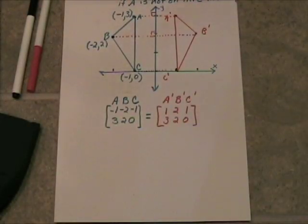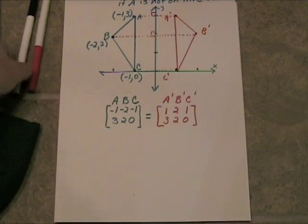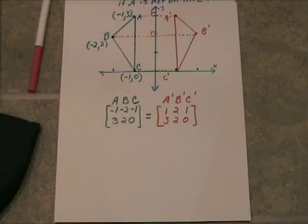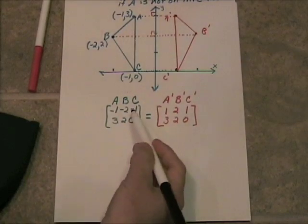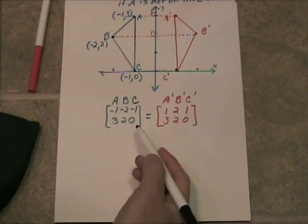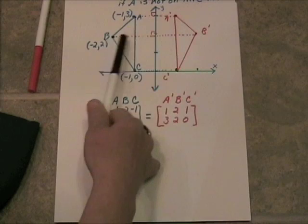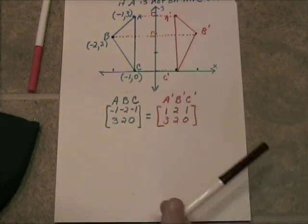Now, we need to think about this. From a matrix standpoint, what can I multiply this A, B, C matrix by that'll change the value of the X's to their opposites and leave all the Y's the same? The figures are the same size. They're the same shape. They're actually congruent. They've just been reflected.